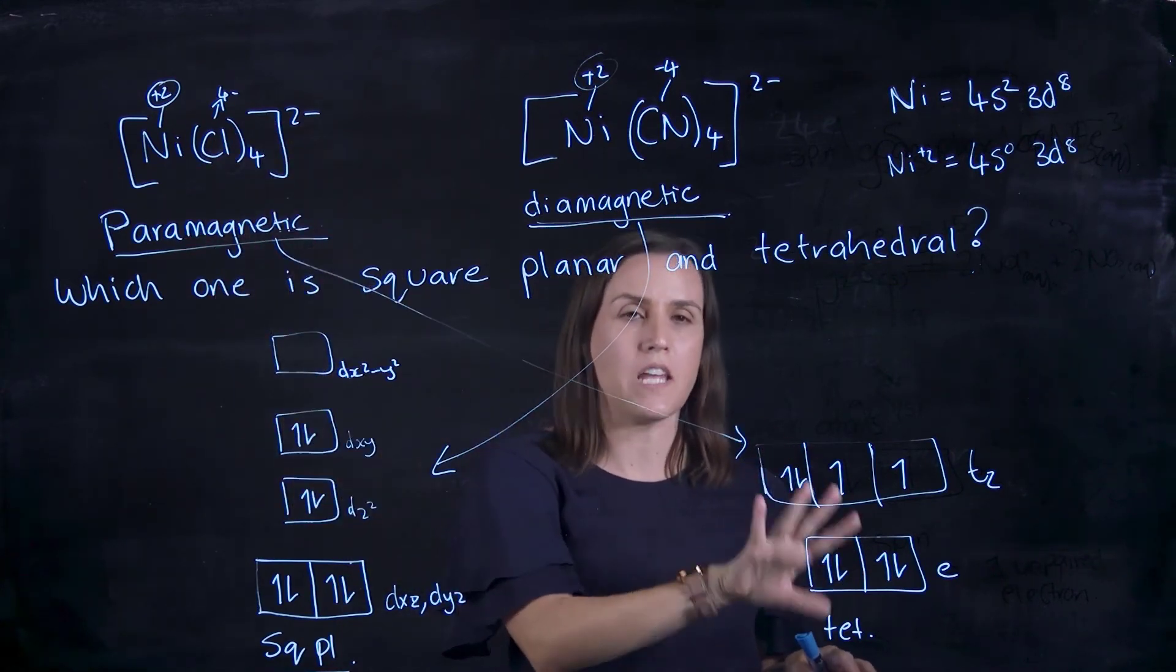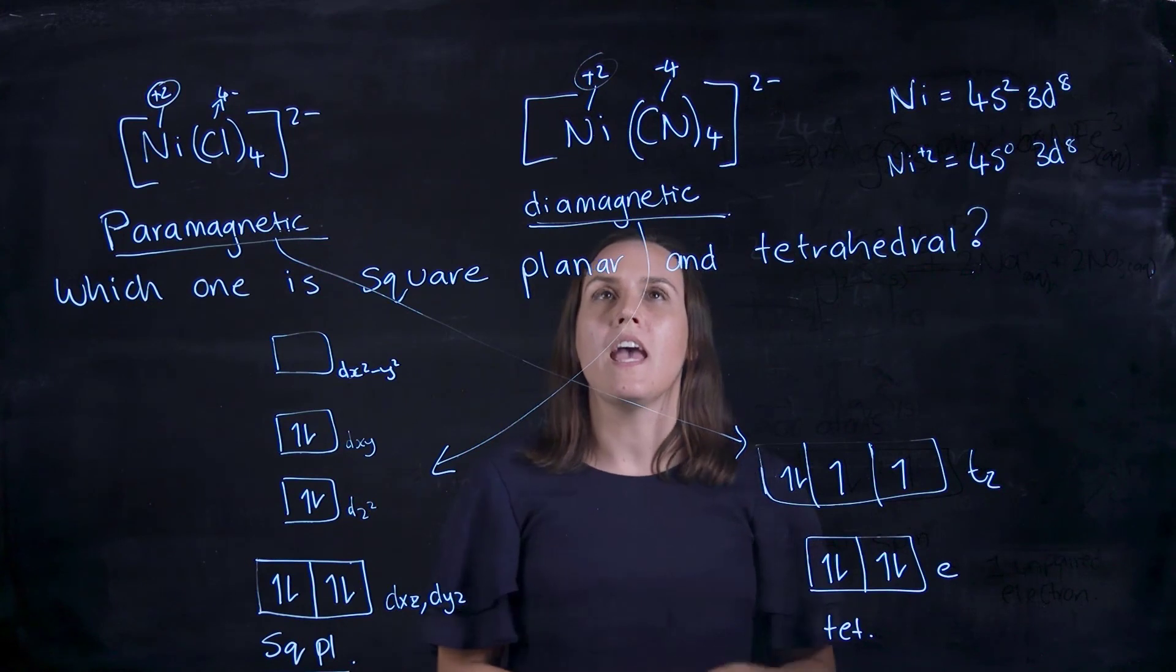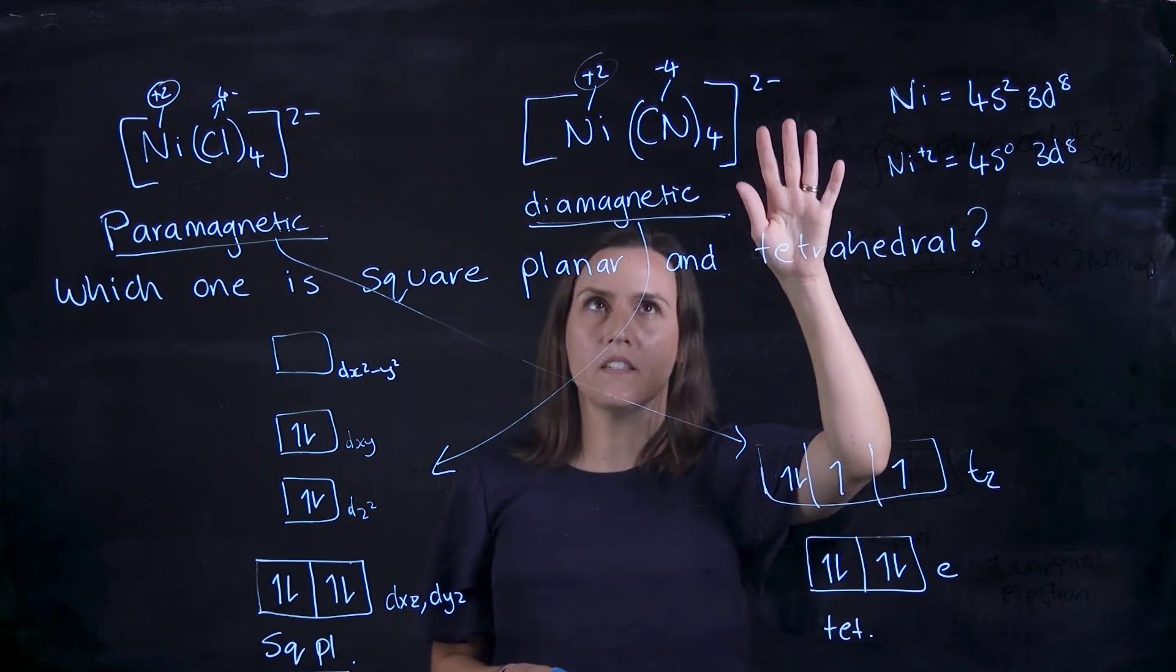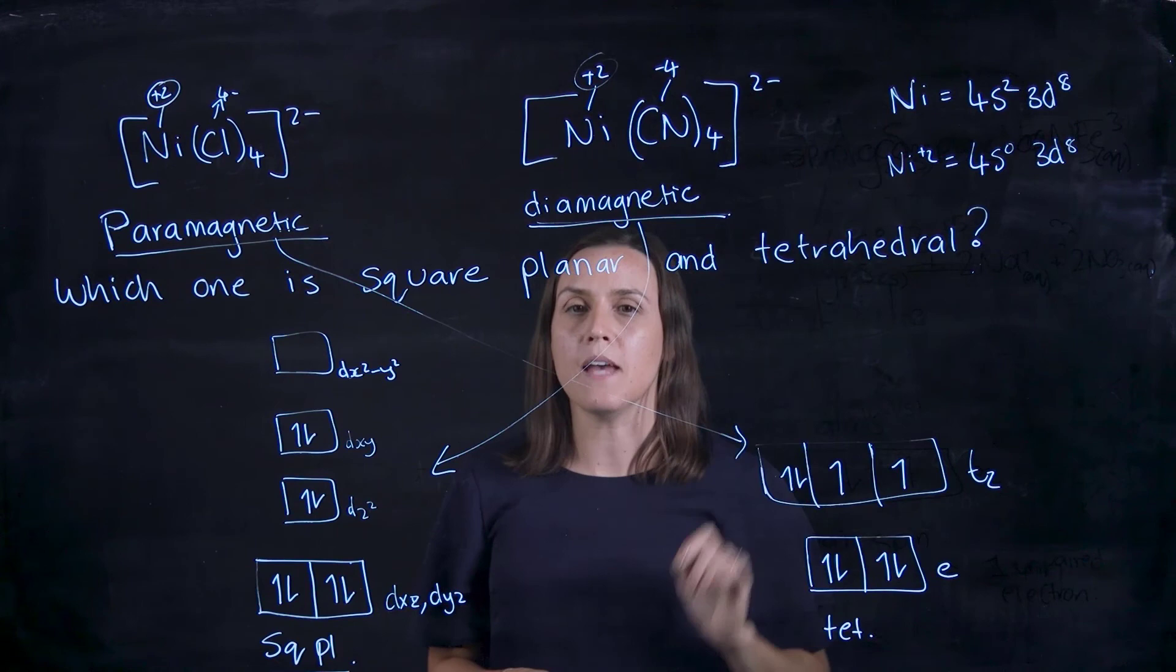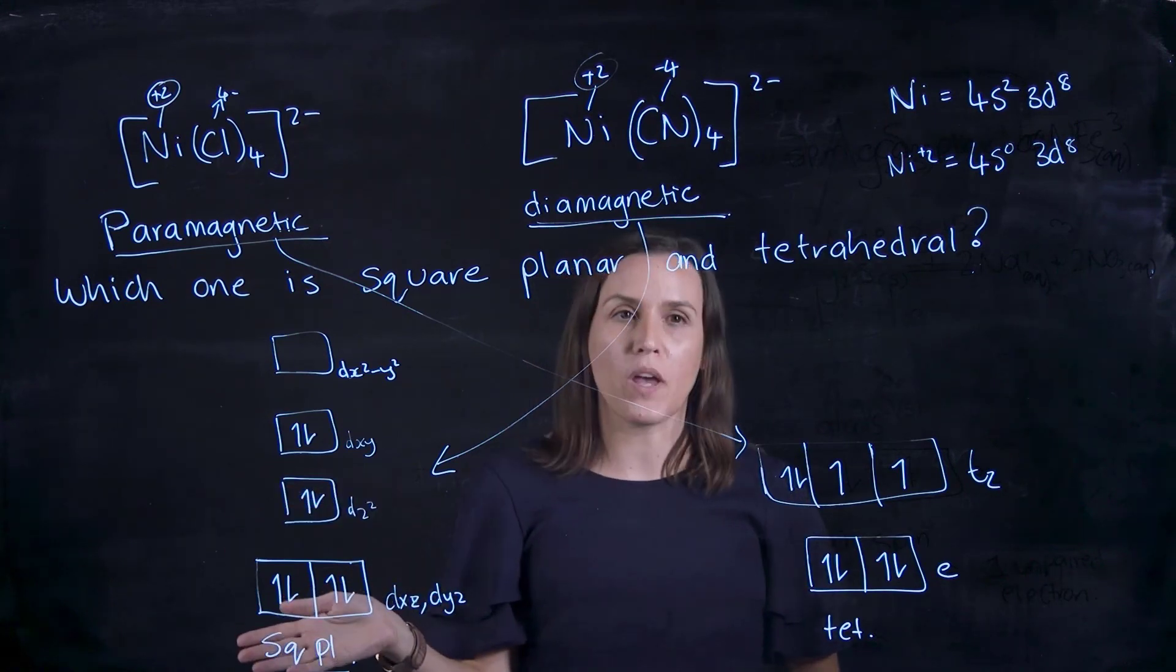So the nickel chloride complex is paramagnetic and therefore a tetrahedral arrangement, and the nickel with the cyano groups is diamagnetic and square planar.